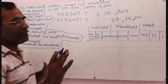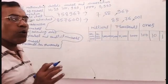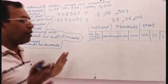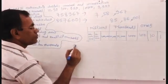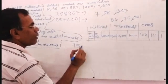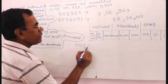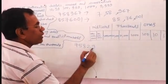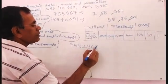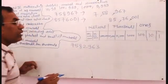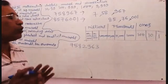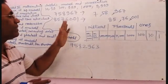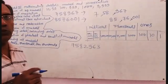I have written here downside, but you should write in a straight line so you will understand. Now I am writing the number: 7, 5, 8, 2, 9, 6, 3. You have to arrange it according to the international place value chart.